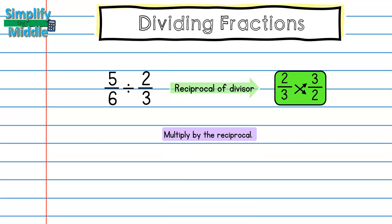Now that I have my reciprocal, I'm going to multiply by it. In a dividing fractions problem the two big steps are: find the reciprocal of the divisor, and then multiply by that reciprocal. So here I have 5/6 times 3/2, which was my reciprocal, and I'm ready to multiply straight across.